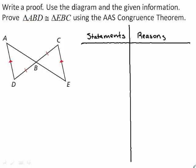Write a proof. Use the diagram and the given information to prove that triangle ABD is congruent to triangle EBC using the AAS congruence theorem. Given that line segment AD is parallel to line segment EC, prove that triangle ABD is congruent to triangle EBC.